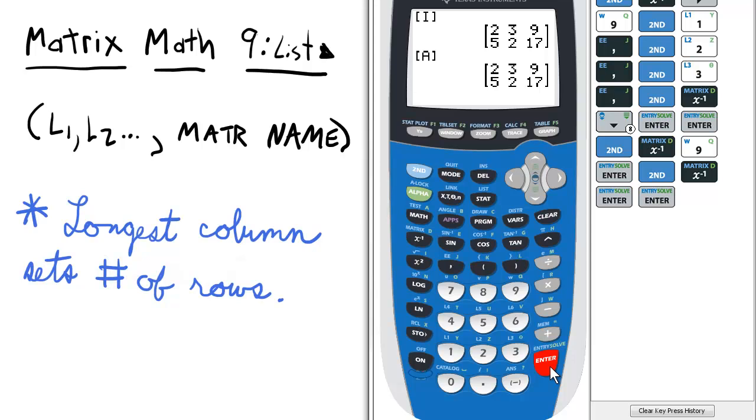One comment, the longest column will dictate the number of rows for the target matrix. So for example, if list 1 is 3 elements, list 2 is 3 elements, and list 3 is 5 elements, the target matrix will have 5 rows and the missing elements will have a value of 0.